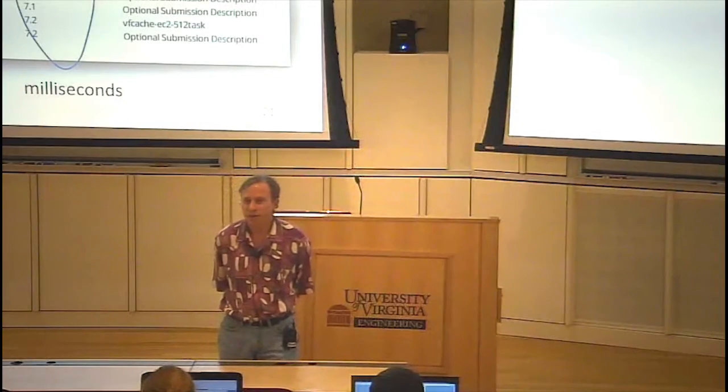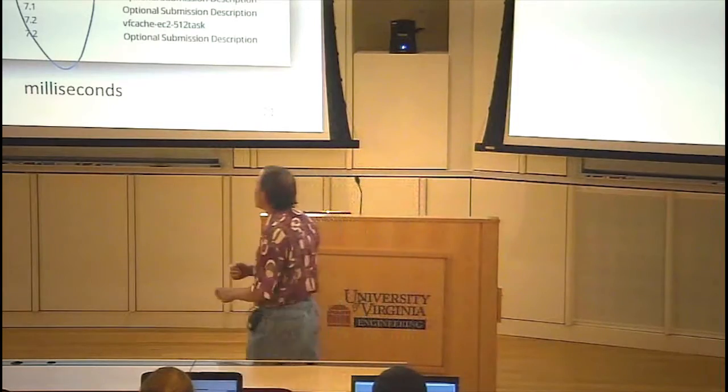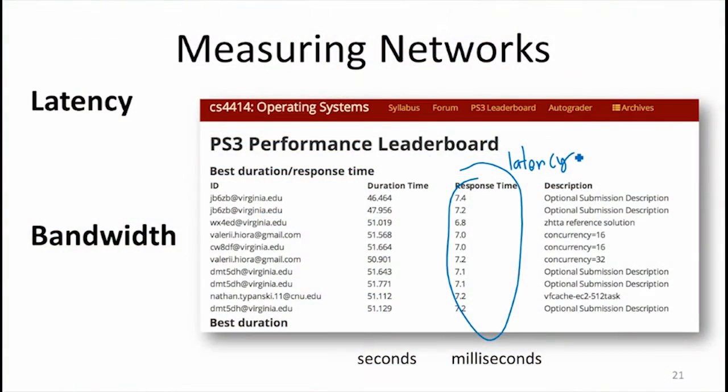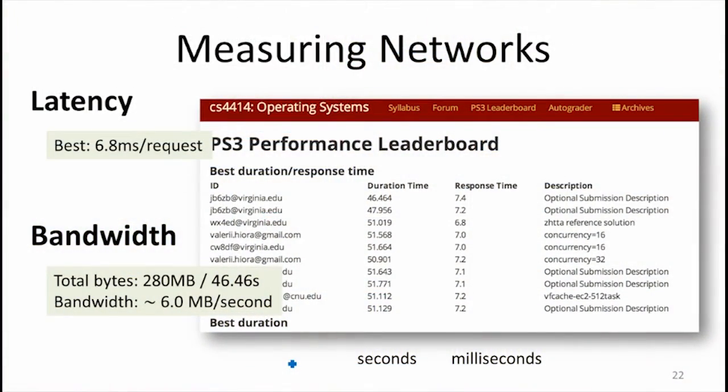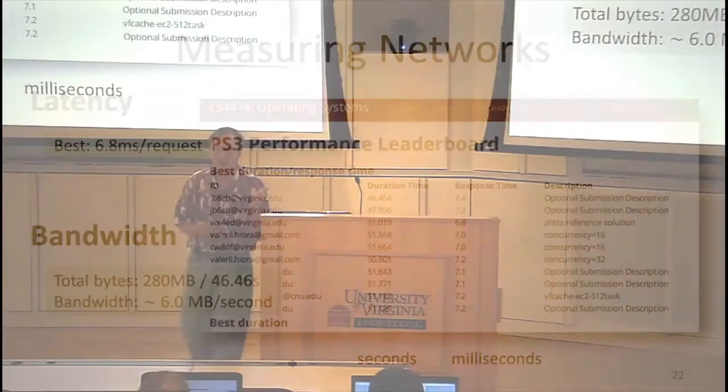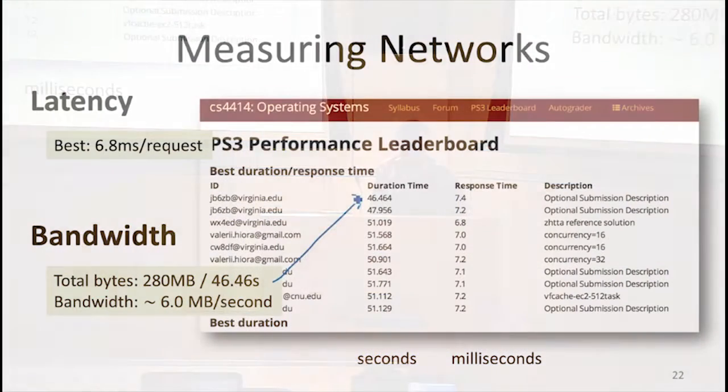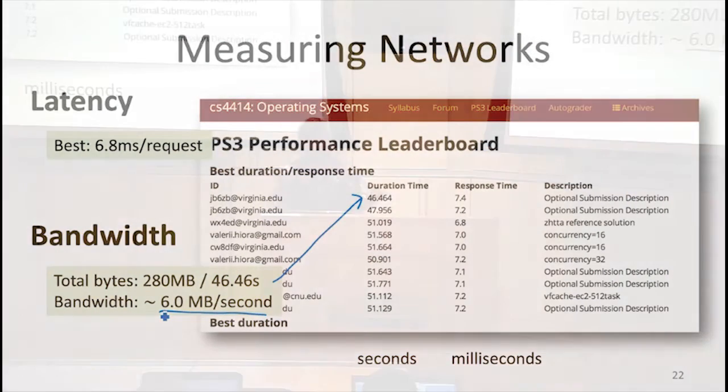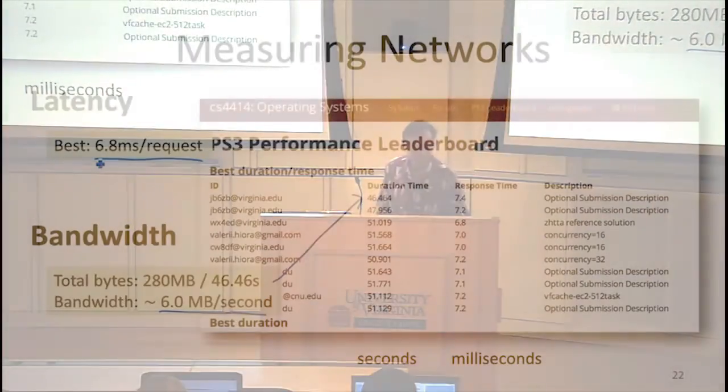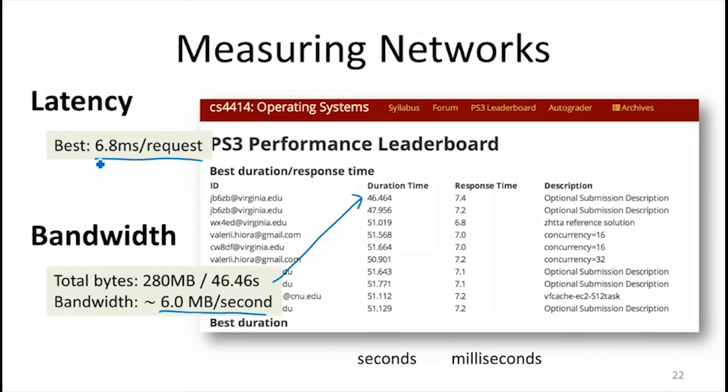Good. So the duration time is a proxy for bandwidth. Assuming that each of these servers is sending the same amount of data, this is related to bandwidth. To turn this into bandwidth, we need to know how much data. The test was actually doing 280 megabytes of data total. Not a huge amount, but enough that the results are sort of stable. Certainly if we did a longer test with more data, the results might be more meaningful. That gives us a bandwidth for the top server of six megabytes per second. Do we like that for both of these? How would we decide if these are good results? If we're getting 6.8 milliseconds per request and six megabytes per second, do those seem like good results?